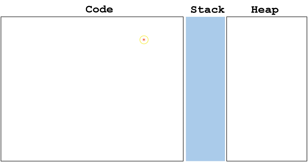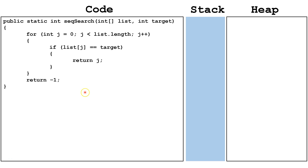Let's look at some code for a sequential search. This code was adapted from the course description for AP Computer Science A. So we're taking an array of ints called list, and then an int called target, which is the number we're looking for. We're going to go through the entire list using this for loop. If we find an index that contains the target, we're going to return that index. If we get through the entire list and don't find the target, we're going to return negative 1, which indicates that it is not present in the list.